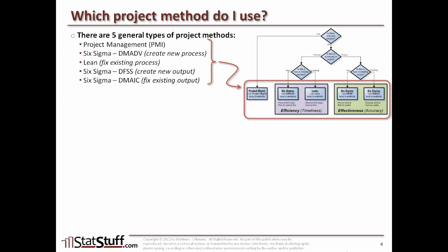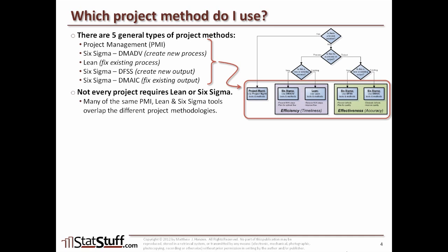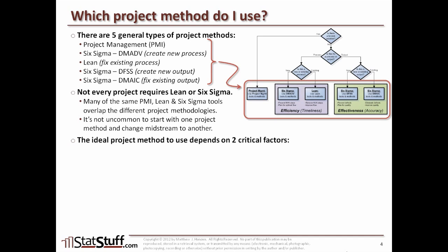As you walk through the drill down, it's really important that you ask those critical questions that lead you to the right project methodology. Not every project requires Lean or Six Sigma. There are two critical factors to consider. The first is the root cause: is the root cause — or the solution that resolves the root cause — already known? If it is, then you just use the PMI sets of tools and methods to implement that solution. There's no need to go to advanced Lean or Six Sigma tools if you already know what the solution is.